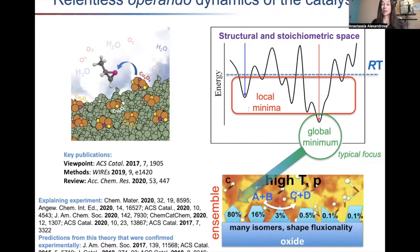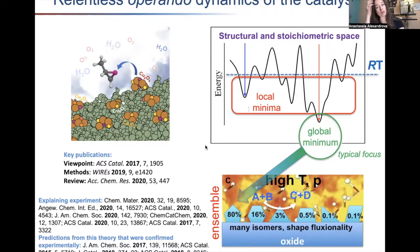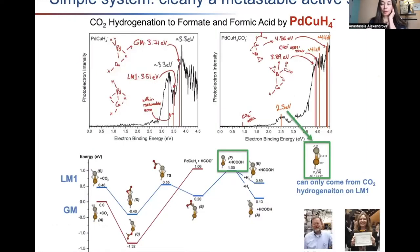If a property is governed by the most prevalent minima — like a spectral signature — the most prevalent species will dominate. But if it's about rate, something less populous could be governing it. This is a very annoying but interesting view on the catalytic interface because it exponentially increases our work, yet provides extremely interesting insights — both explaining experimental results and making predictions subsequently confirmed by experiment. We collaborate closely with experimentalists to keep theory in check.